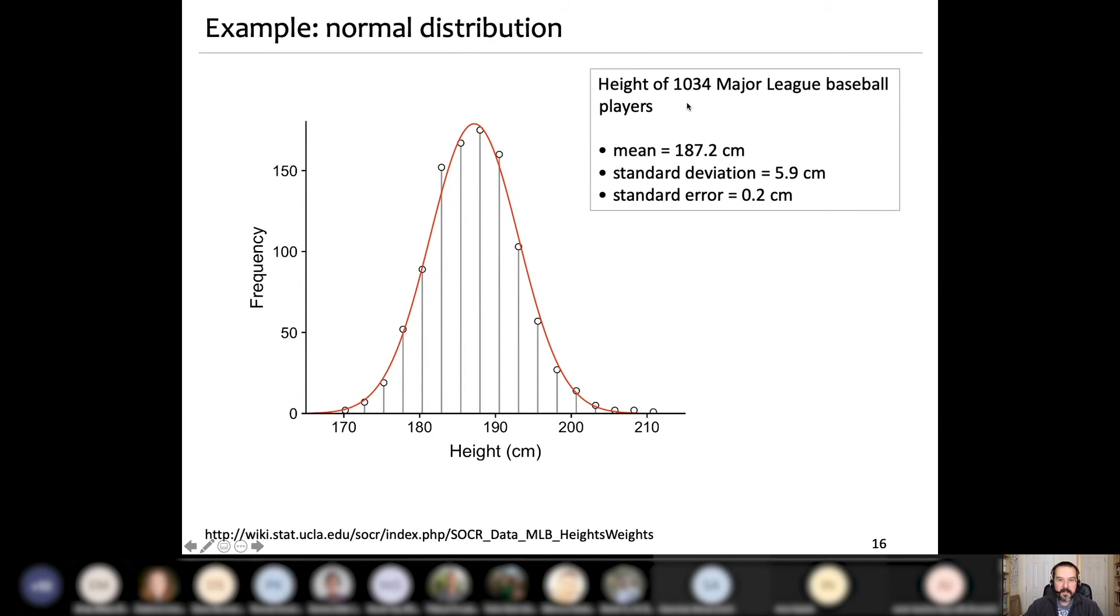This is a real life example of normal distribution. This is height for 134 Major League Baseball players in the United States. It's taken from this website. You can check it yourself. And each bar corresponds to the count of players at a given height. The height is a continuous variable, but for this purpose it was rounded up to the nearest inch. But you can see here very well that the real distribution of heights is very well approximated by the normal distribution, which is presented here by a red curve. And the mean in this case is 187.2 centimeters.